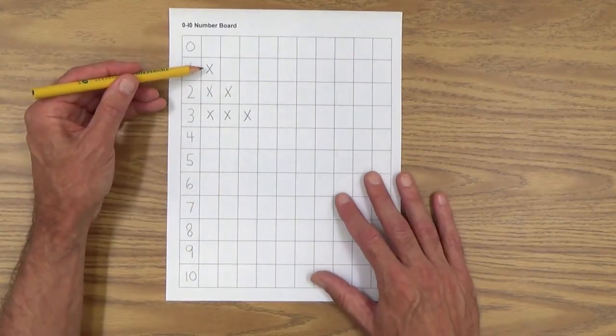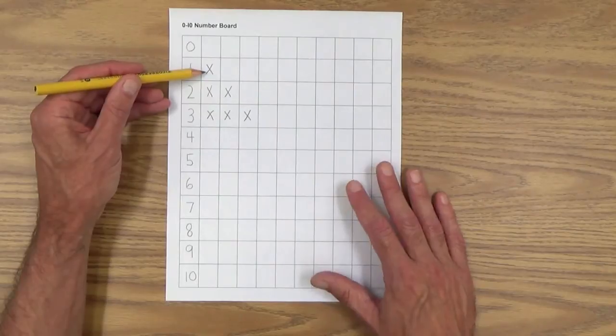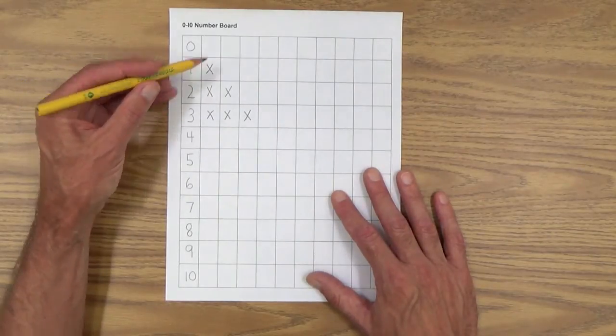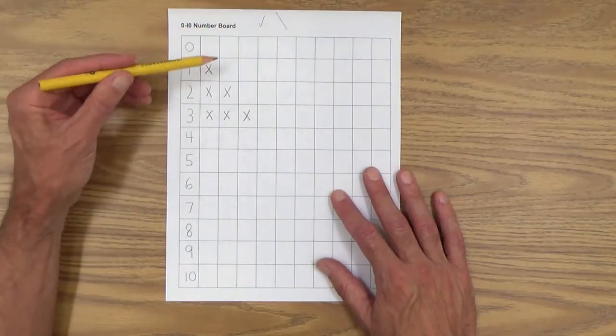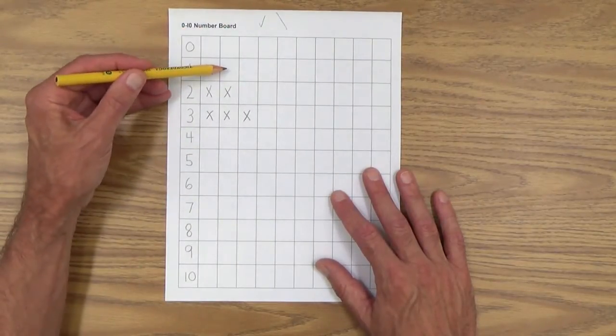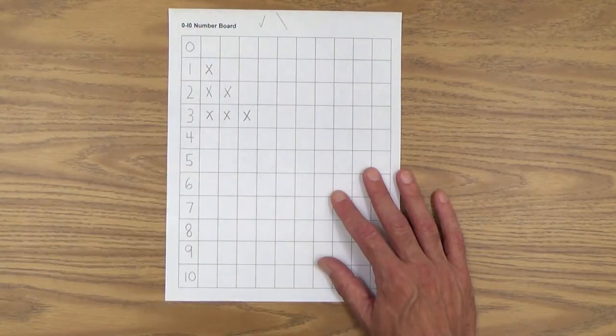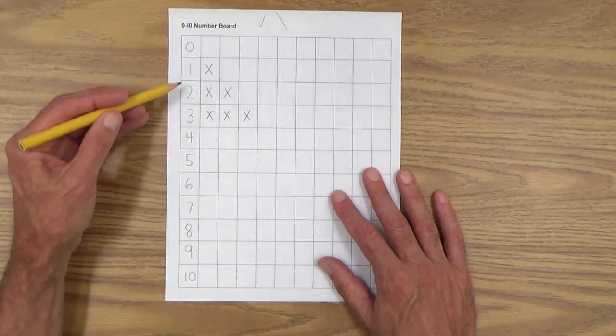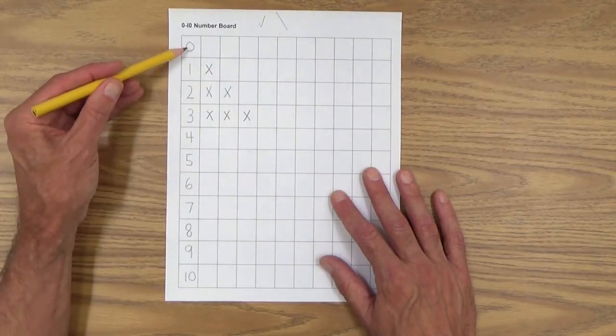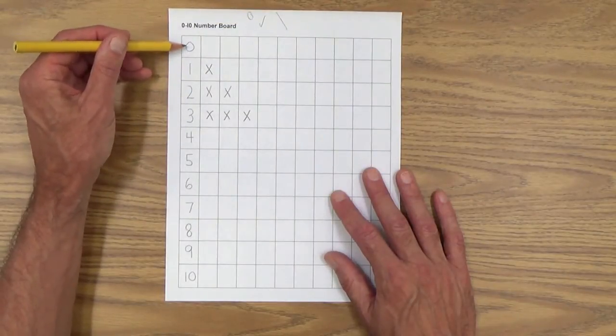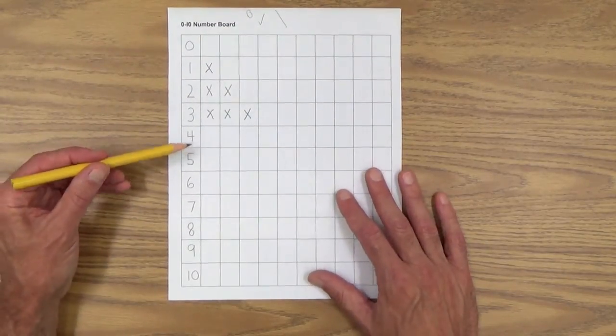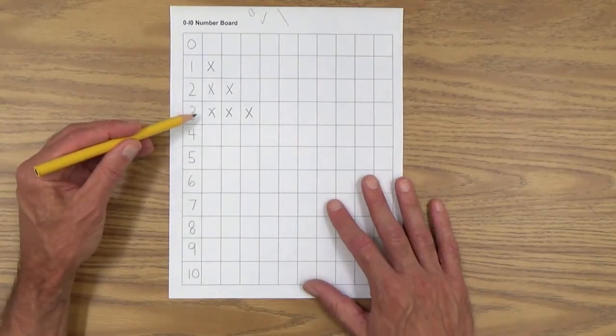And of course, I would recommend having them make an X, but some kids might like a check mark, a slash, whatever, just as long as it's very clear what box they're filling in. But I recommend an X because it doesn't really look like any number. Some kids even like to make little circles like that, but they could confuse that with a zero.